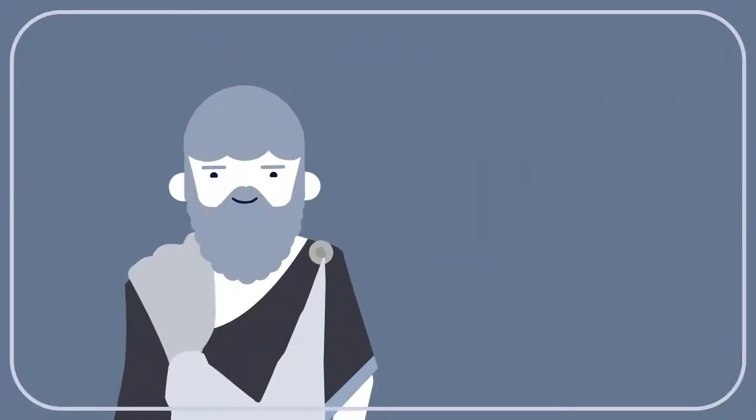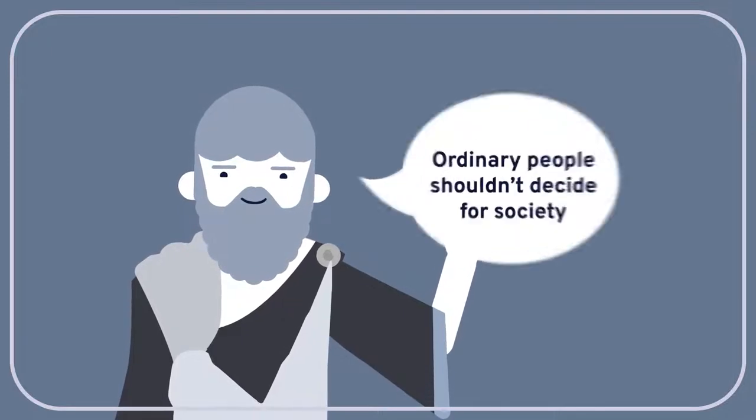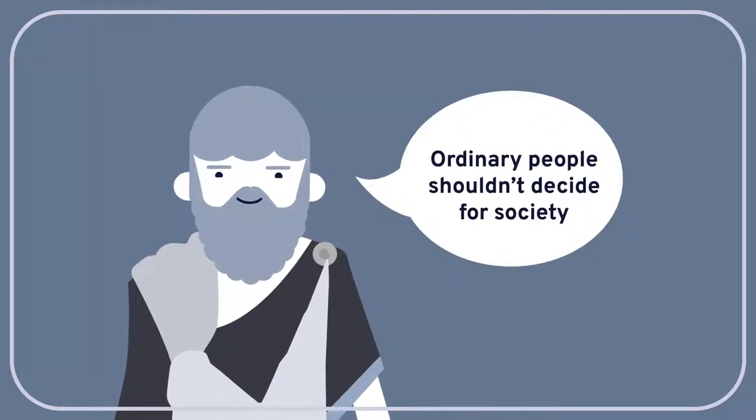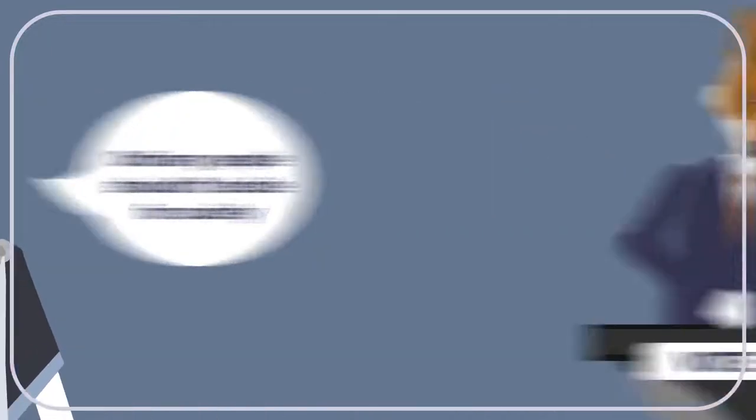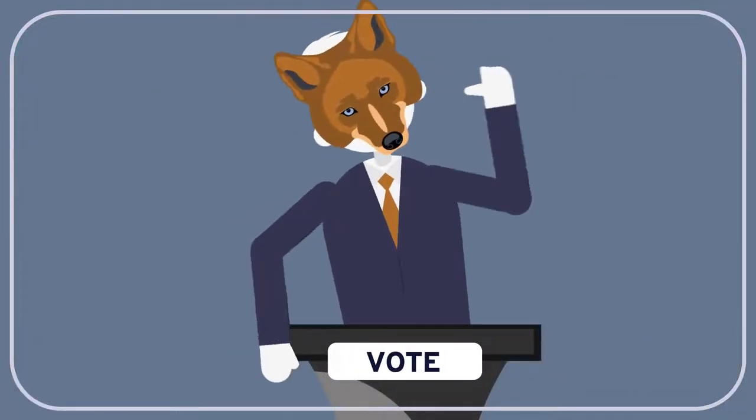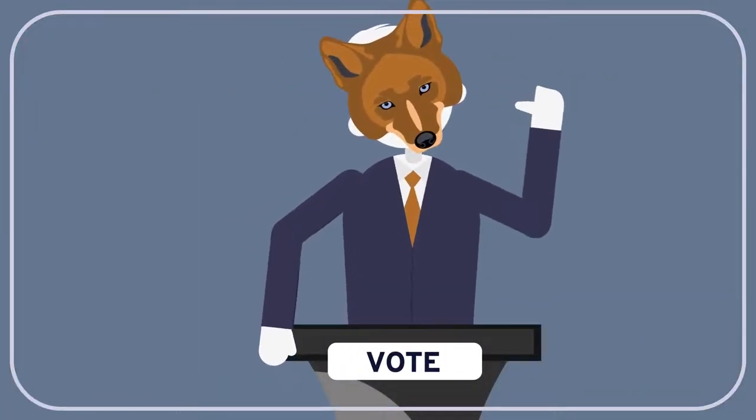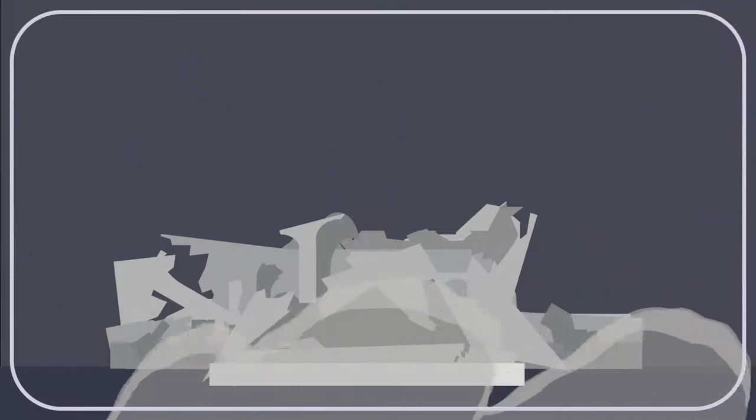This question lies at the heart of Plato's ancient objection to democracy. Given that ordinary people tend to be ignorant about matters affecting society as a whole, and given that they'll naturally favor policies that serve their own interests, democratic rule is unlikely to succeed. Even if it could manage to avoid being hijacked by a demagogue, it's likely to leave society in ruins.